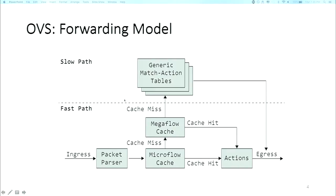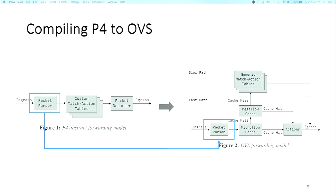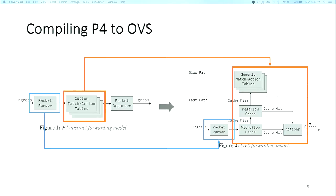When a packet comes in, it is parsed, then seen into two caches. If an entry is found, the actions are looked up in the cache and applied on the packet directly, instead of going to the collection of match-action tables. If there is a miss in both caches, you eventually end up going into the match-action tables. After processing the packet, a new flow rule is generated and installed into the MegaFlow and MicroFlow cache. You can think of MicroFlow as L1 cache and MegaFlow cache as L2 cache.